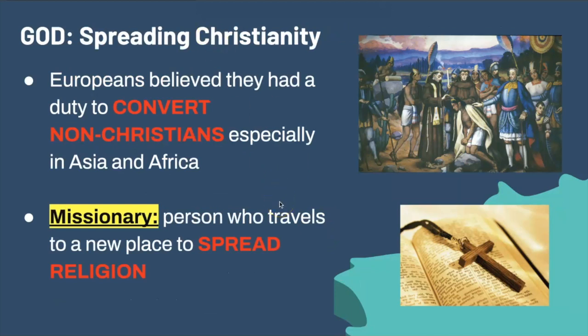The next big G was God. Not only do we have people exploring to make money, we have people looking to make a religious impact — a social aspect of exploration. Europeans believed that the Christian kingdoms of France, England, Spain, and Portugal had a duty to convert non-Christian populations on other continents. This took place in Asia and Africa as trading posts were set up with missionaries — even in places as far as Japan, where the Dutch tried to spread Christianity.